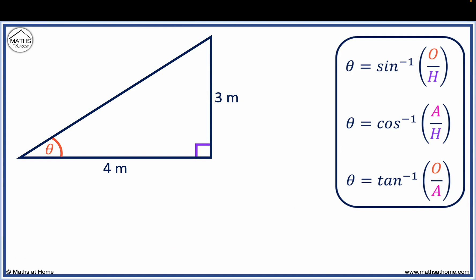For example, this triangle has sides of three meters and four meters. We wish to calculate the angle theta. The side which is three meters is opposite theta, so we label it O for opposite.